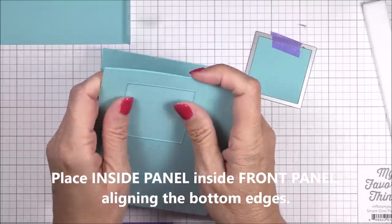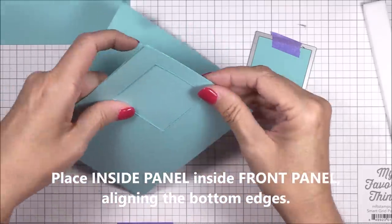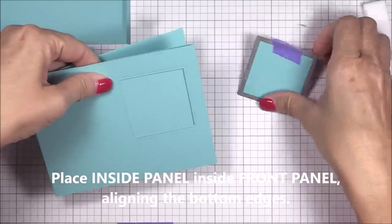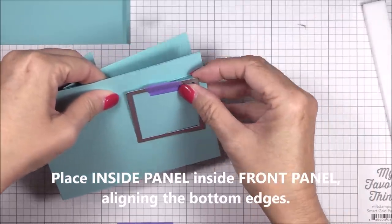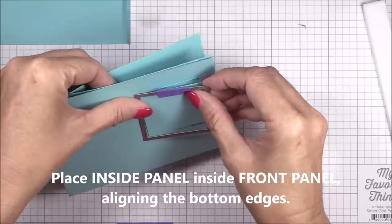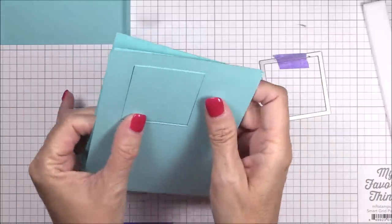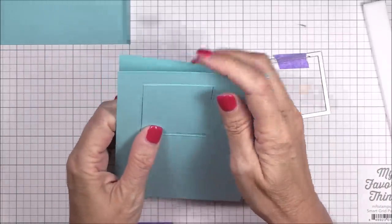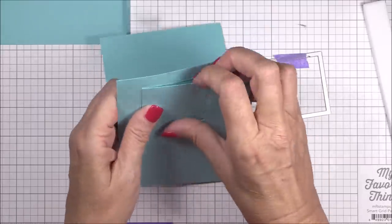After running it through my die cutting machine, I've removed the die from the front panel and I'm sliding the inside panel inside the front panel, making sure to align all of the edges of both. Hopefully your brain doesn't explode after hearing all of my references to front, inside and back panels.